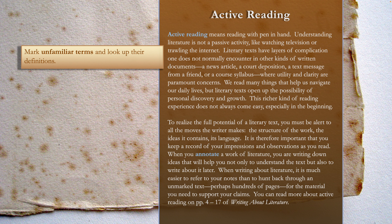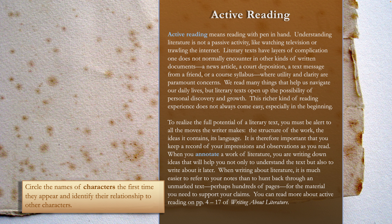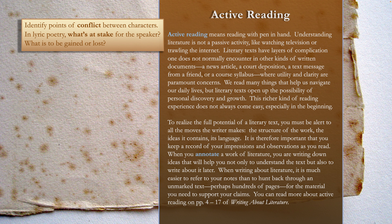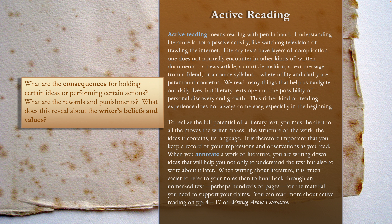Here are some things you can do when you're reading. You can mark unfamiliar terms and look up their definitions. You can circle the names of characters the first time they appear and identify their relationship to other characters. You can identify points of conflict between characters. Or in lyric poetry, you can try to figure out what's at stake for the speaker — what is to be gained or lost? What are the consequences for holding certain ideas or performing certain actions?